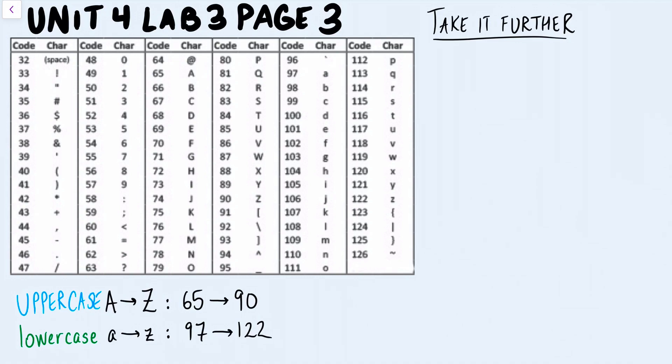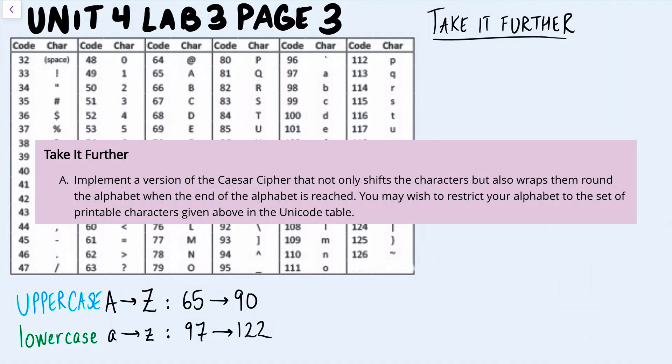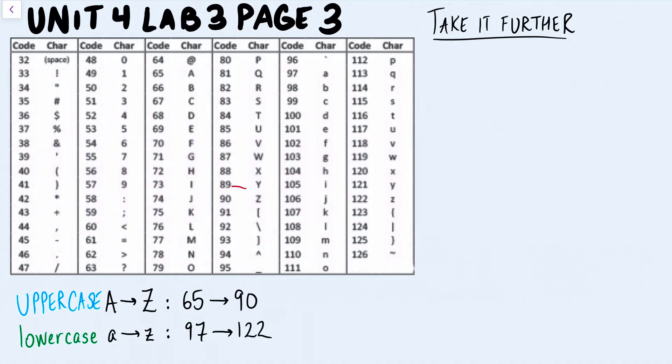So what we want to do in take it further A is we want to make sure that when we shift the Unicode values that we end up with all letters. So even if you shift capital Z by 1, you don't end up with, so look over here, instead of shifting capital Z by 1 and ending up with an open brace or open bracket, you bring Z right back to A. So we've got to figure out a way to make sure that the Unicode values, when you add 1 to 90, it ends up at 65.